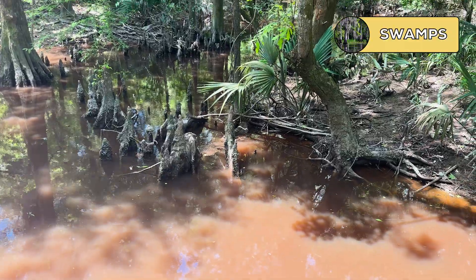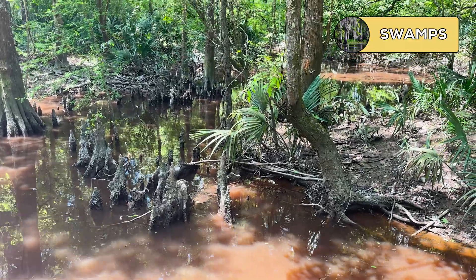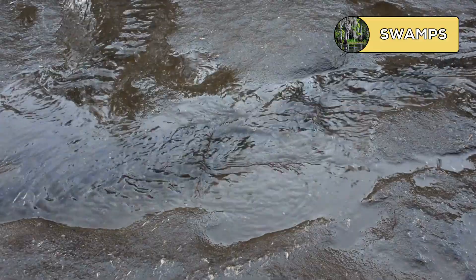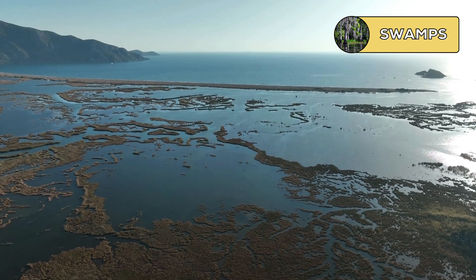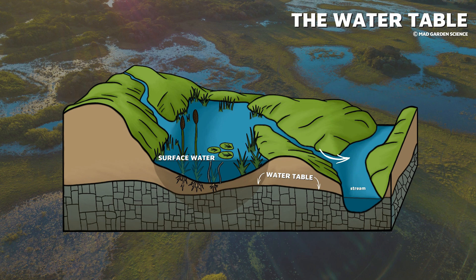A swamp is a wetland permanently saturated with water and dominated by trees. There are freshwater swamps and saltwater swamps. Freshwater swamps are commonly found in tropical areas near the equator and usually experience year-round heat and humidity. They often form on flatland around lakes or streams where runoff is sluggish and the water table is high. Runoff is water that flows over the ground surface and ultimately drains into bodies of water like rivers, lakes, and oceans. The water table is an underground boundary between the soil surface and the area where groundwater saturates spaces between sediments and cracks in rocks.